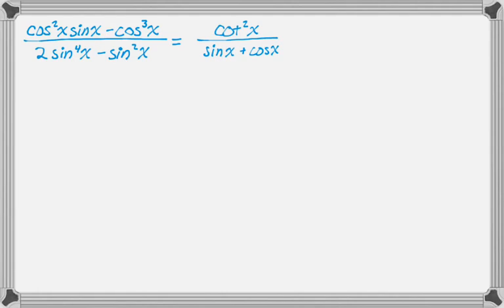Let's look at one more. We've got cosine squared times sine minus cosine cubed, all over 2 sine to the 4th minus sine squared, and that's going to equal cotangent squared over sine plus cosine.